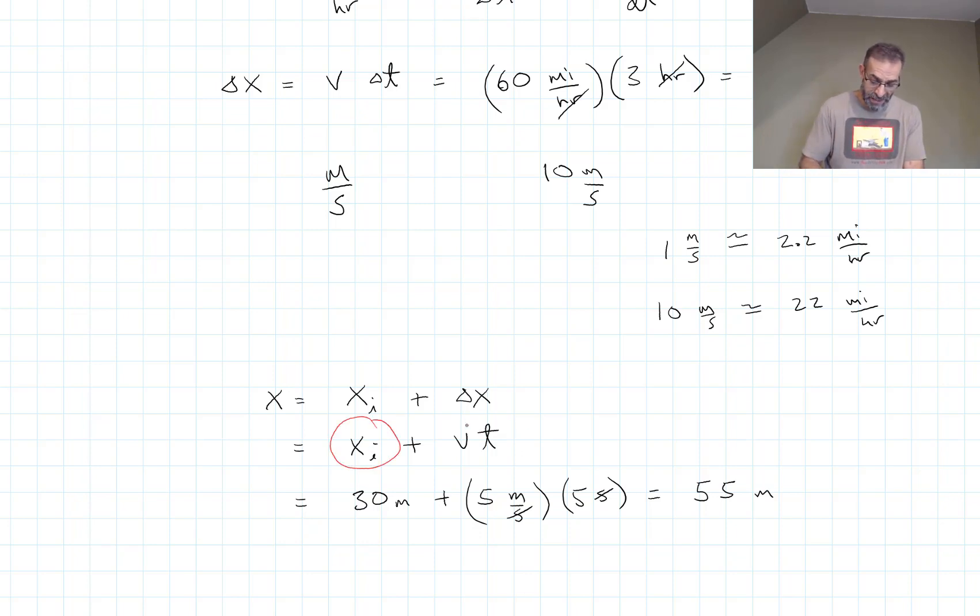Leave it as variables - x's and v's and t's - until the very end. In the very last step, you put in the numbers with the units, cancel the units appropriately, and have the correct units in your answer.